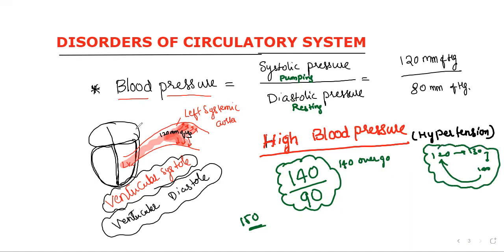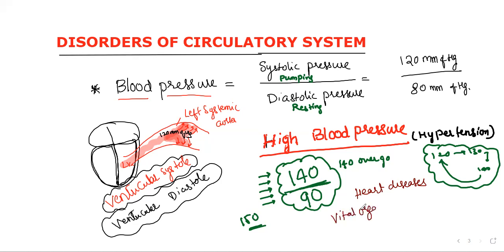But if continuously, even at rest in normal resting status, a person's blood pressure is recorded as 140, we can definitely say he is having high BP. High blood pressure leads to many heart diseases — it is going to be a burden on the heart. This pressure may also affect vital organs like the brain and kidneys, and in fact every particular organ gets affected.